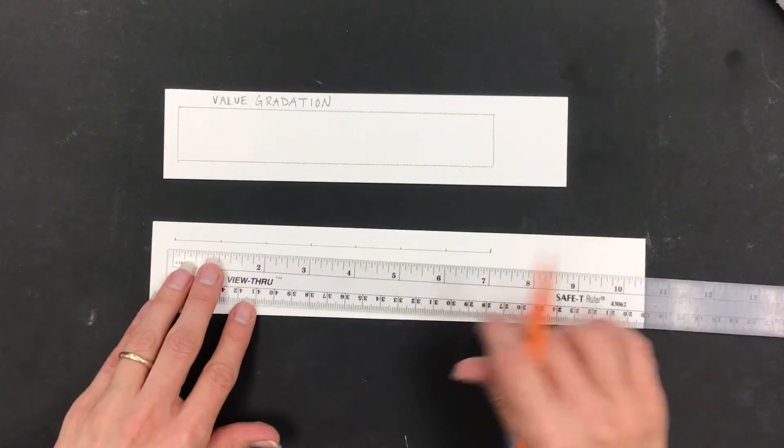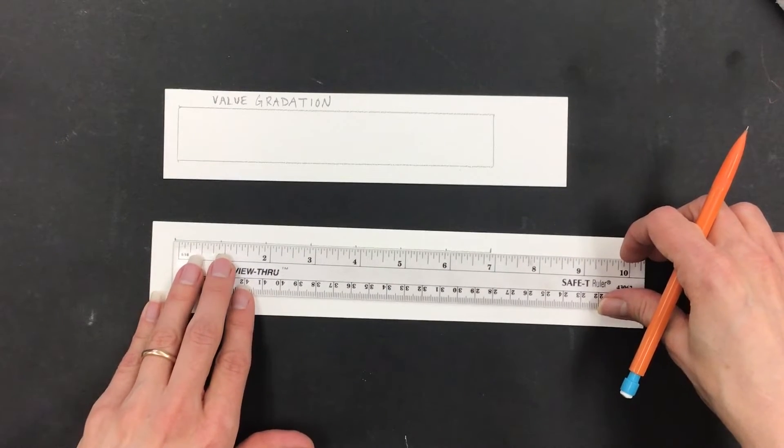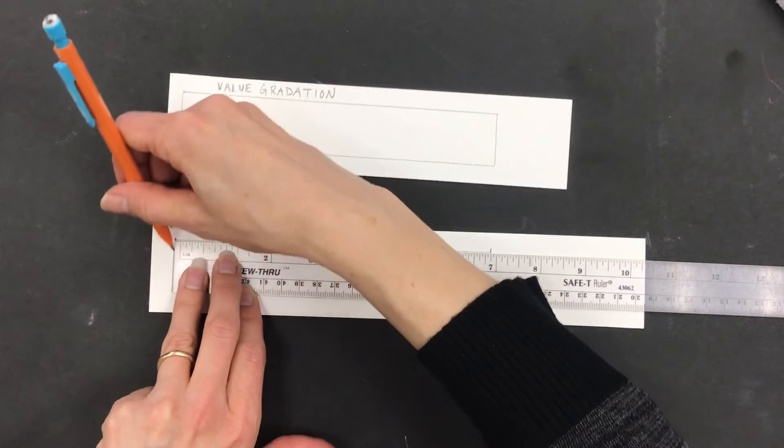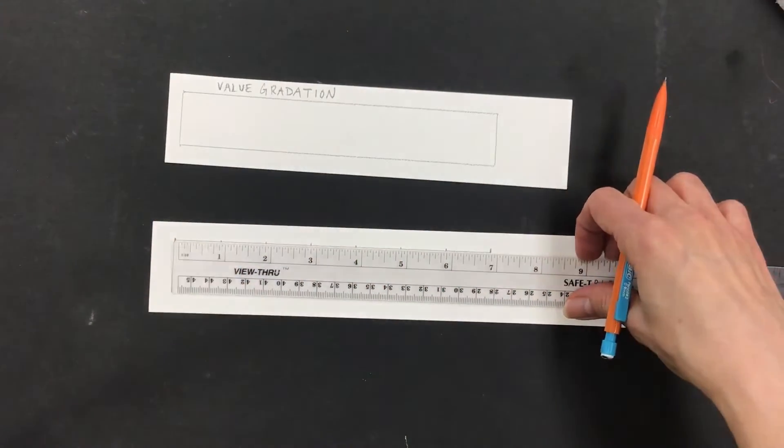So I have tally marks and a line. I can get my 45 degrees from my ruler right here, and now I'm going to have to rotate it.